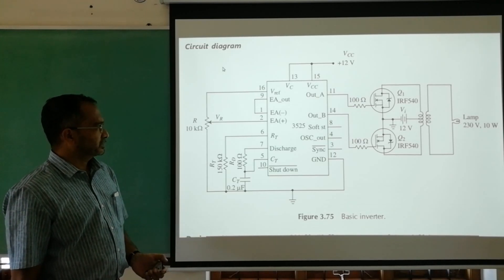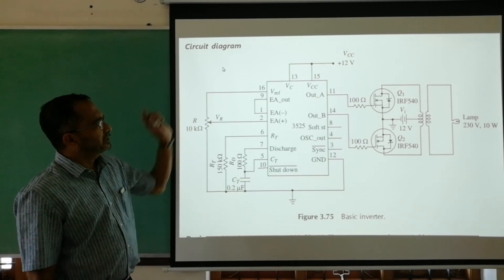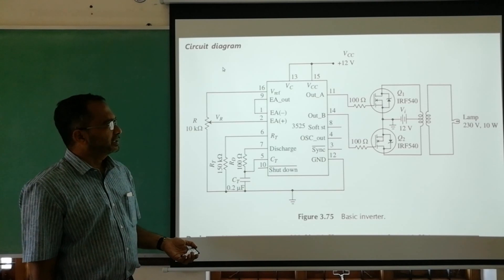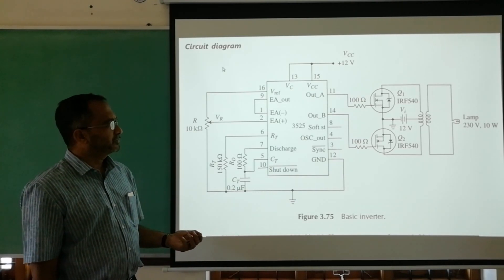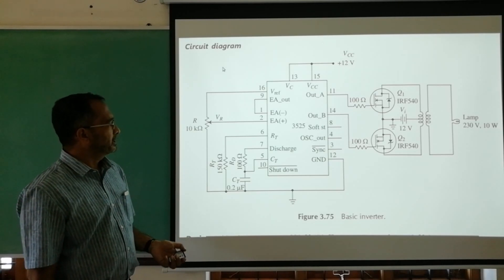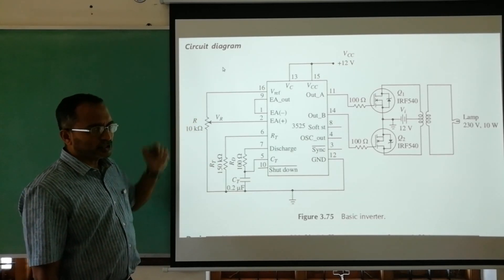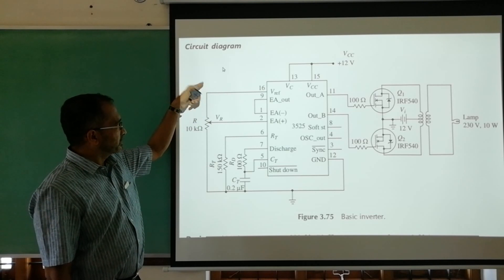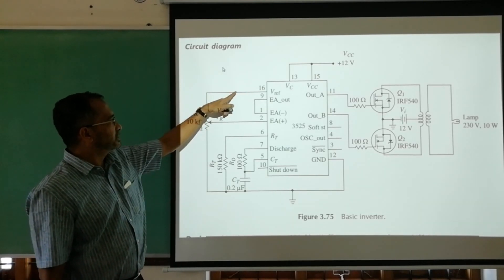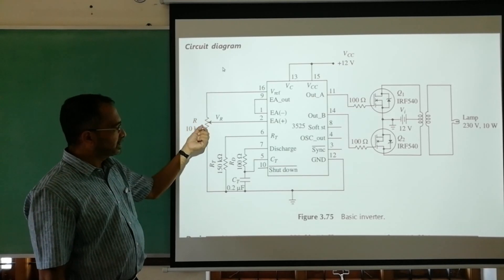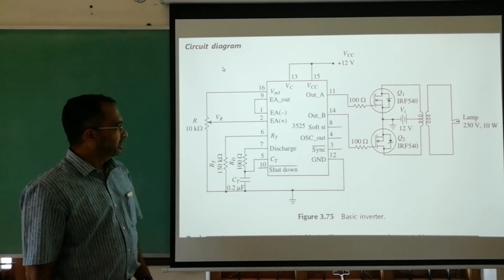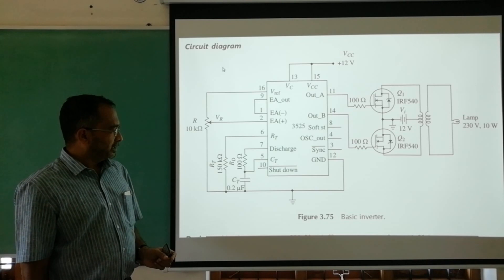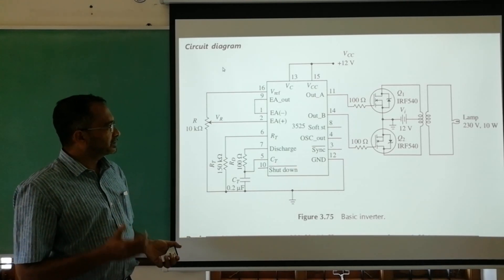Now we shall design this circuit. For the design, first we use a VCC supply of 12 volts for the IC, because the VCC supply maximum parameter is 35 volts and minimum is 8 volts, so we select 12 volts as VCC. There is a linear potentiometer used to vary the available voltage. The voltage at pin number 16 is 5.1 volts, so by varying this using the linear potentiometer we can vary the duty cycle. There are two resistors and a capacitor that together decide the frequency of oscillation.